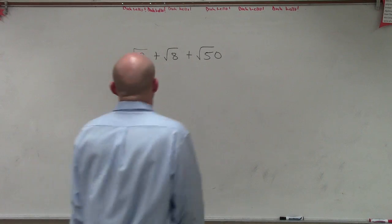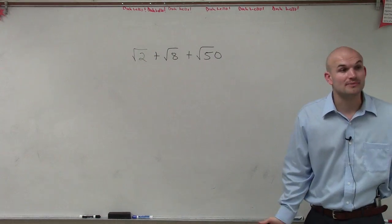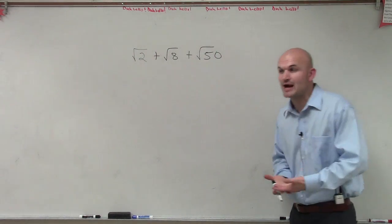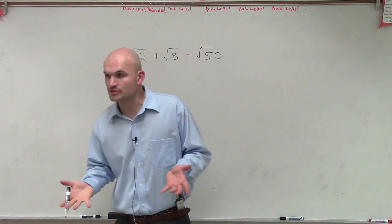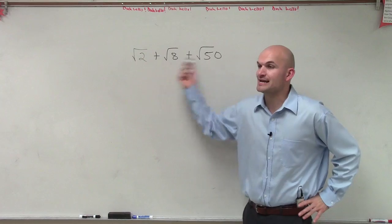So on this problem here, what I have is the square root of 2 plus the square root of 8 plus the square root of 50. Now remember, ladies and gentlemen, we can only add or subtract square roots, or any of our radicals, as long as they were the same term.